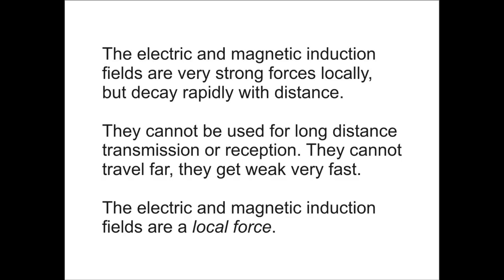The electric and magnetic induction fields are very strong forces locally, right around the antenna — within, say, a half wavelength or a wavelength of the antenna. If the antenna is real small, the effects start to go away within about an eighth wavelength. These local induction fields can't be used for long-distance transmission or reception; they get weak very fast. They're mostly a geometry problem with the size of the antenna and how far apart the charges are, or how something close to the antenna sees charges moving in it.